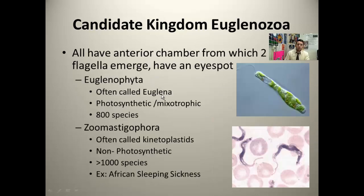The euglenozoa, moving to the right on the cladogram — they're flagellates, they have flagella. Here's a flagellum right here. Within the euglenozoa, we're talking about the euglenoids. We have the euglena; they're photosynthetic. You can see the green pigment — the chlorophyll within.